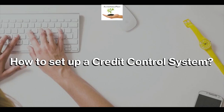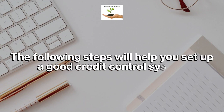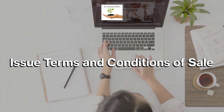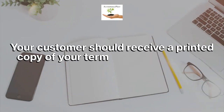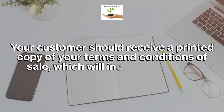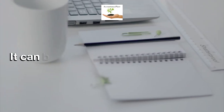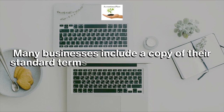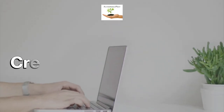How to set up a credit control system. The following steps will help you set up a good credit control system. Issue terms and conditions of sale — your customer should receive a printed copy of your terms and conditions of sale, which will include the credit terms that you have agreed. It can be provided with your invoice or as a separate document. Many businesses include a copy of their standard terms and conditions of sale on their website.